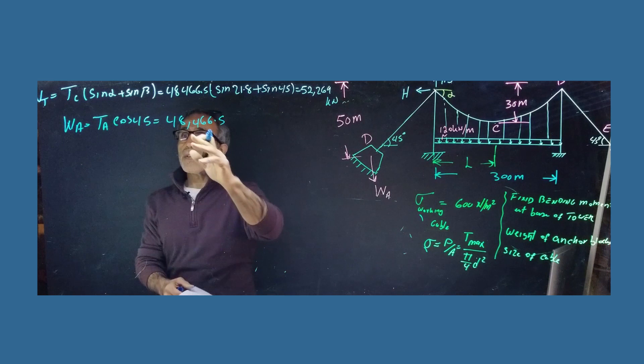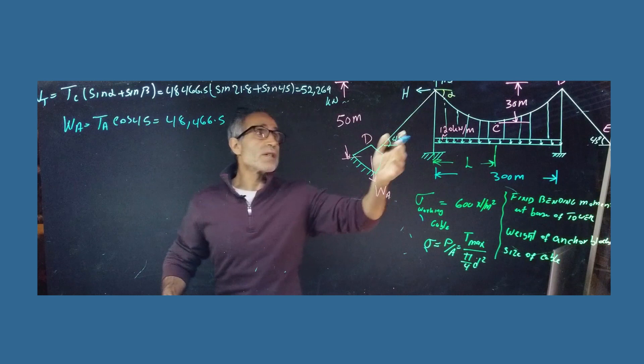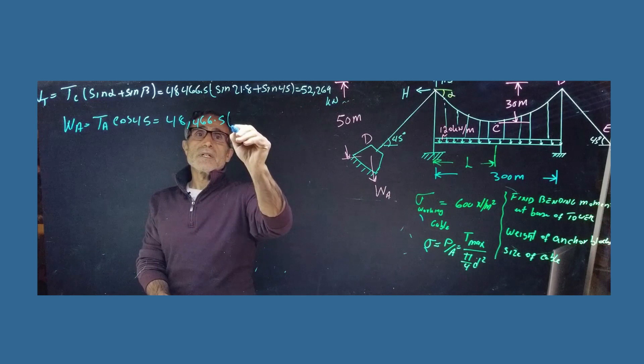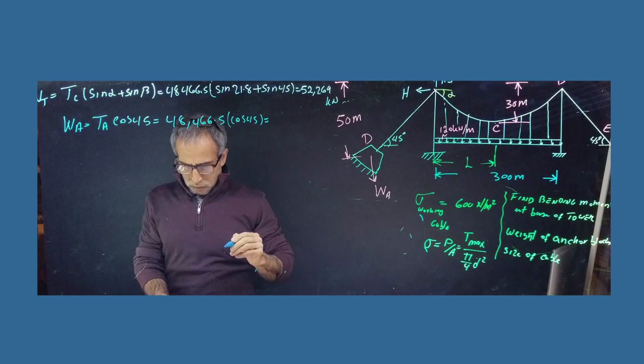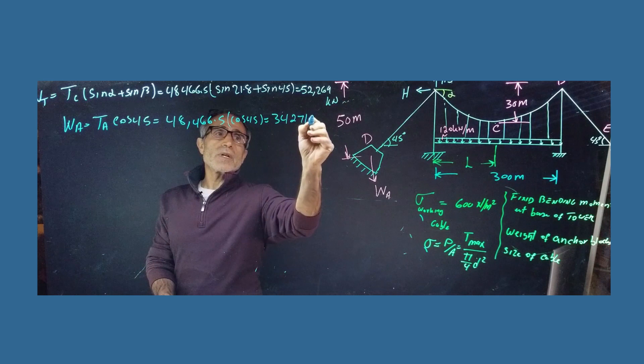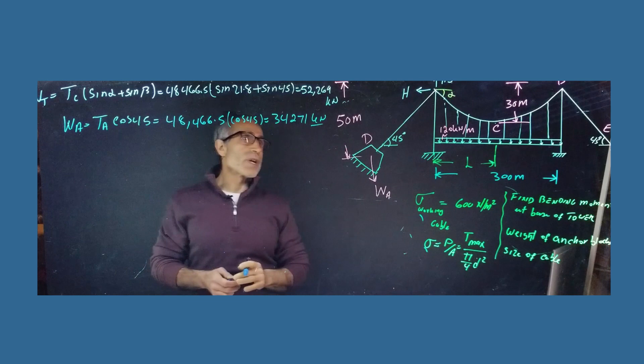And, so that was 48,466.5. I erased what I had there. Let me look back in here. That's so basically your TA is this here. Because the tension here is the tension everywhere. So the same as the TA is the same as the maximum tension. And that's going to be time cosine 45 to find a vertical component of this force here. We're going to have cosine 45. And that's going to come out to 34271 kilonewton. 34271 kilonewton. And that can be converted.